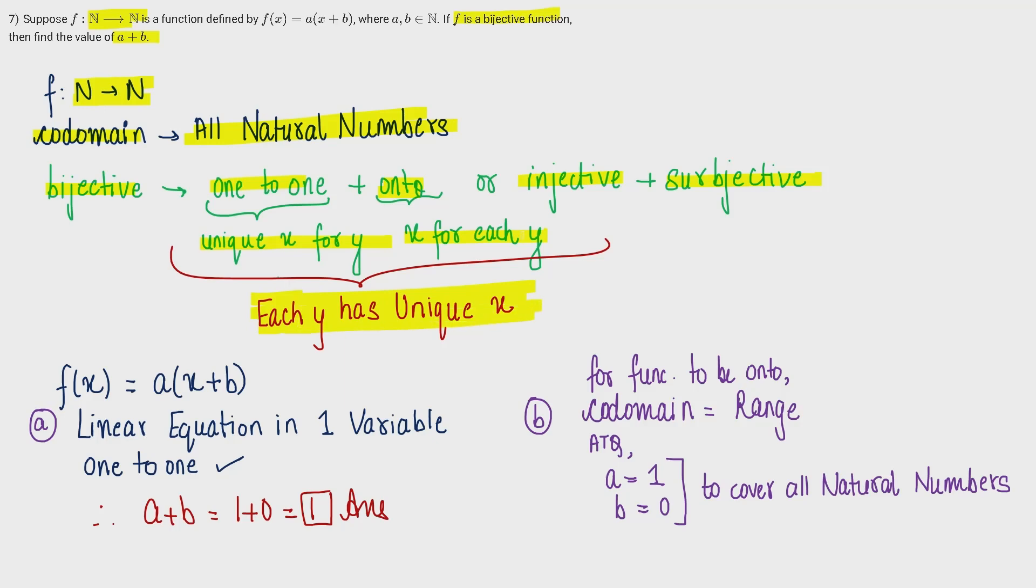This is the function which is given to us: ax + b. Now let's talk about the concepts and figure out what values a and b should have. For any value of a and b, this function will be one-to-one because this is a linear equation in one variable. Put any value of x, you will get the function. Keep any value of a and b, it doesn't matter. So in any case, whether a and b be anything, the function will be one-to-one. So from this we didn't get any information. Now let's talk about the onto function. In onto function, co-domain and range should be equal.